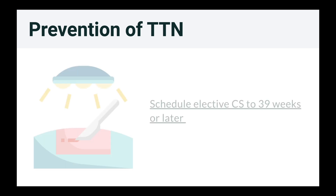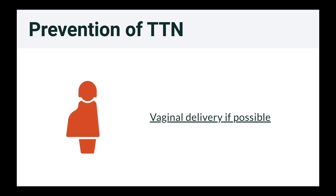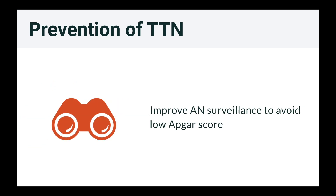Any prevention for TTN? If a cesarean section is needed, it should be scheduled at 39 weeks or later, as this will prevent TTN with a more mature baby. We should allow vaginal delivery if possible. We should also improve antenatal surveillance to avoid a low Apgar score, as a low Apgar score can also lead to TTN.